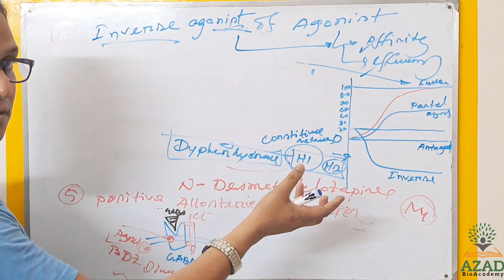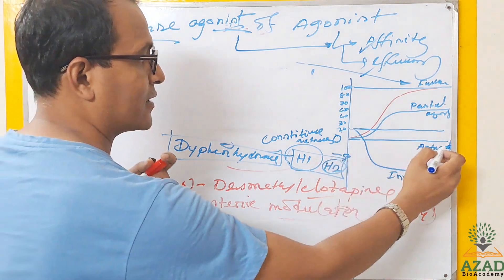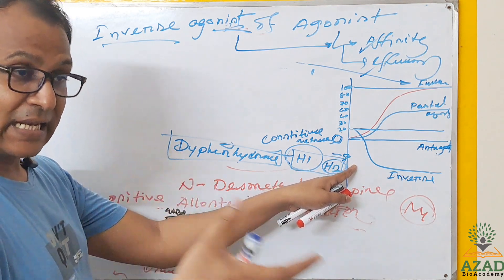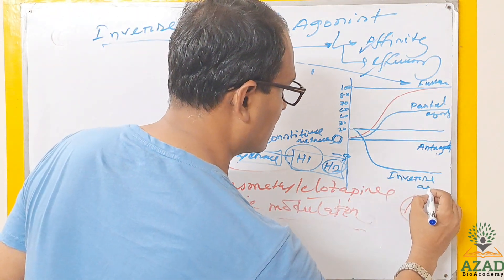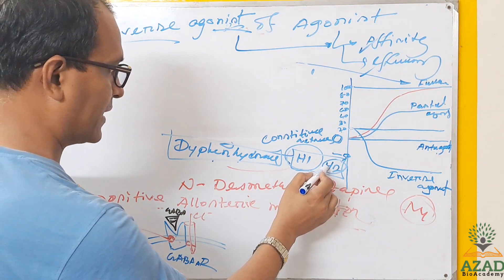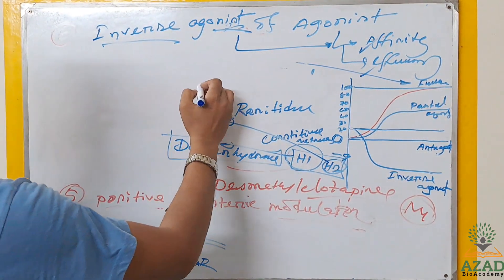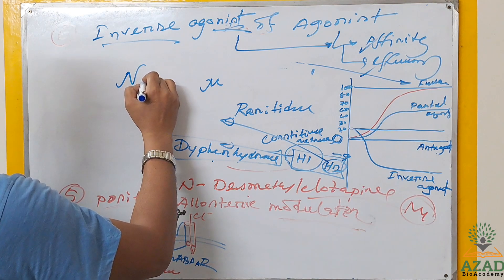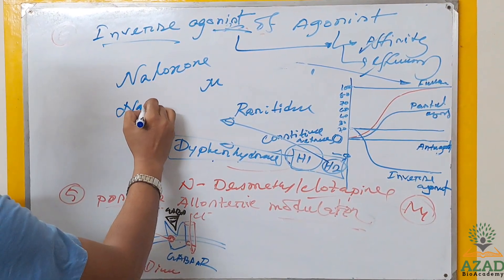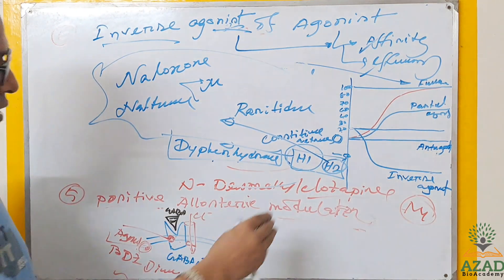Why is it called an agonist? Because it has affinity and it does have activity — but the activity is below zero (negative), not simply zero. Negative activity is still activity. Examples of inverse agonists include diphenhydramine (H1 receptor), ranitidine (H2 receptor in parietal cells), naloxone, and naltrexone (both related to the mu receptor).